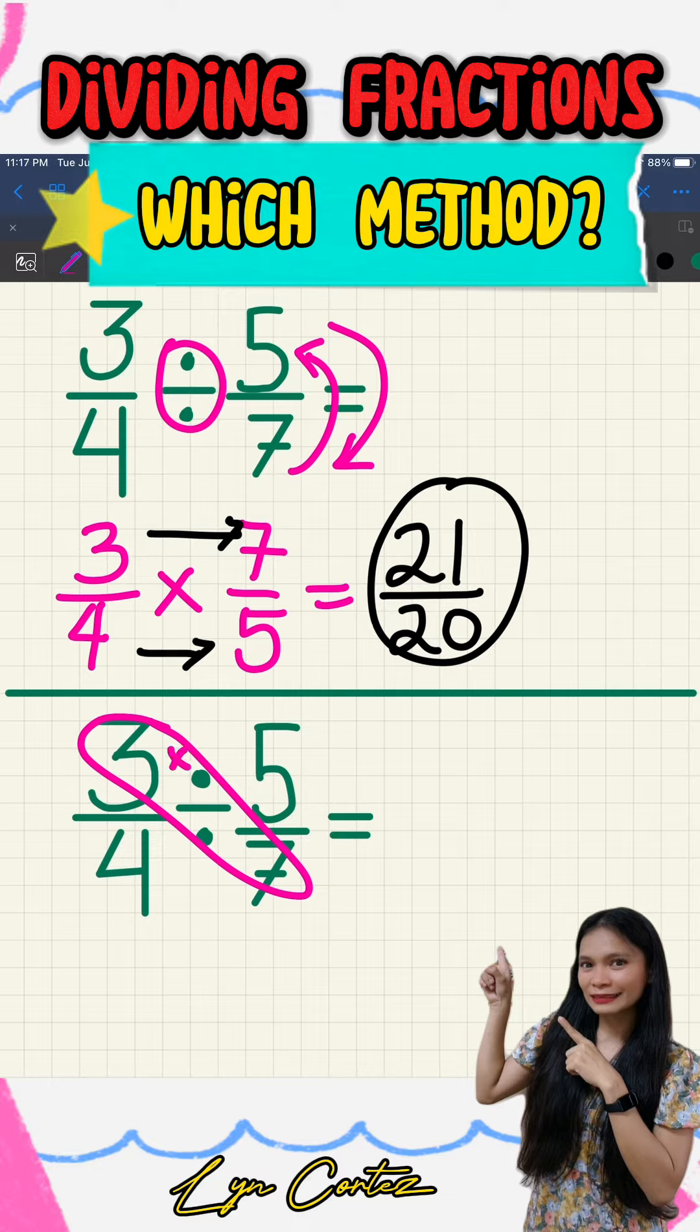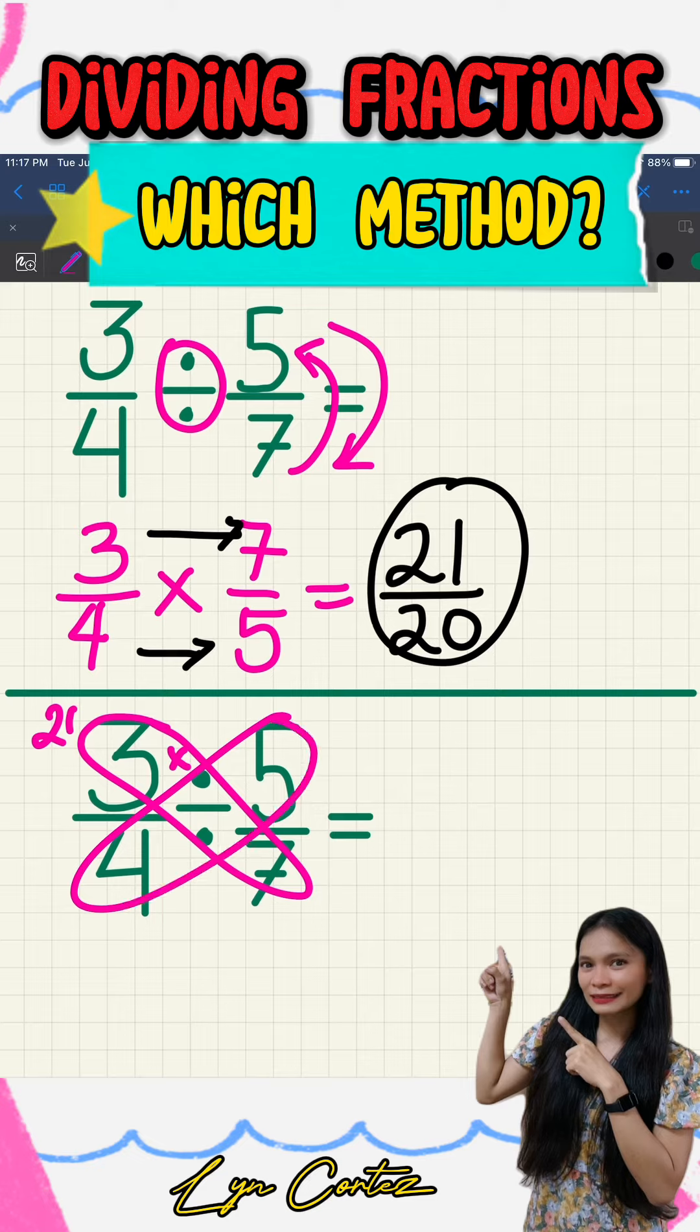So 3 times 7 or 7 times 3, again multiplication, the answer is 21. Write it on the top of 3 for our numerator. Next, 4 times 5 or 5 times 4 is 20. So the answer is 20.